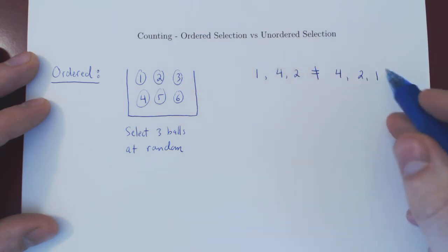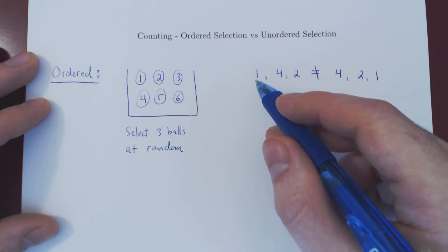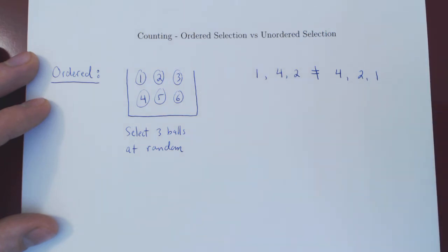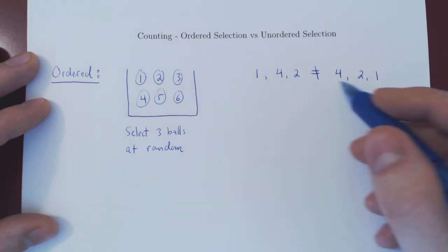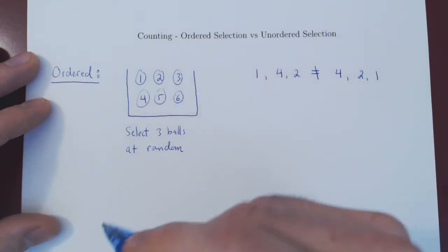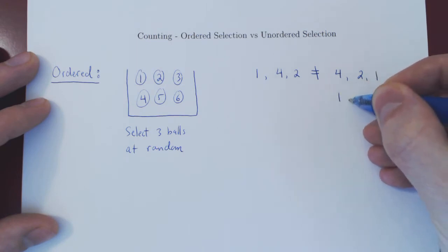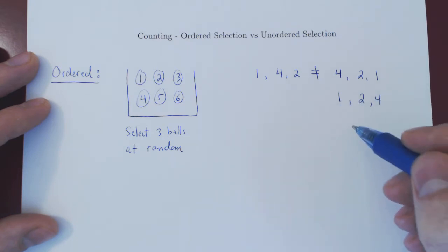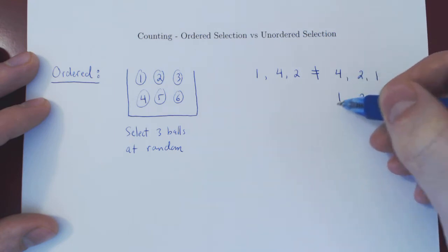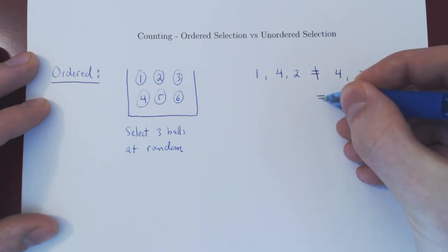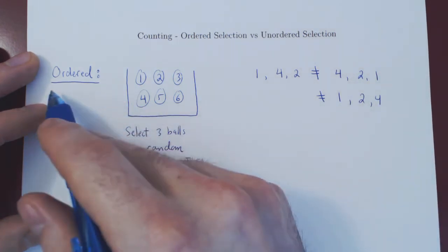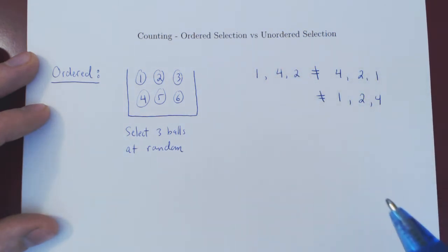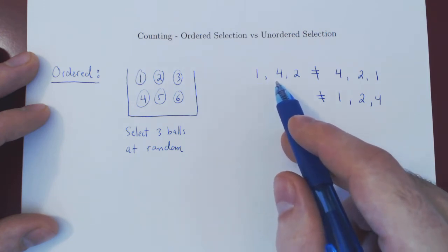Sure, we have in the end the same three balls — one, two, four — both times. But in the first case, one was selected first; in the second case, four was selected first. So that's basically it. When you have an ordered selection, not only do you keep track of the elements you have in the end, but you also keep track of which came first, which came second, and so forth. So the order matters. That is ordered versus unordered.